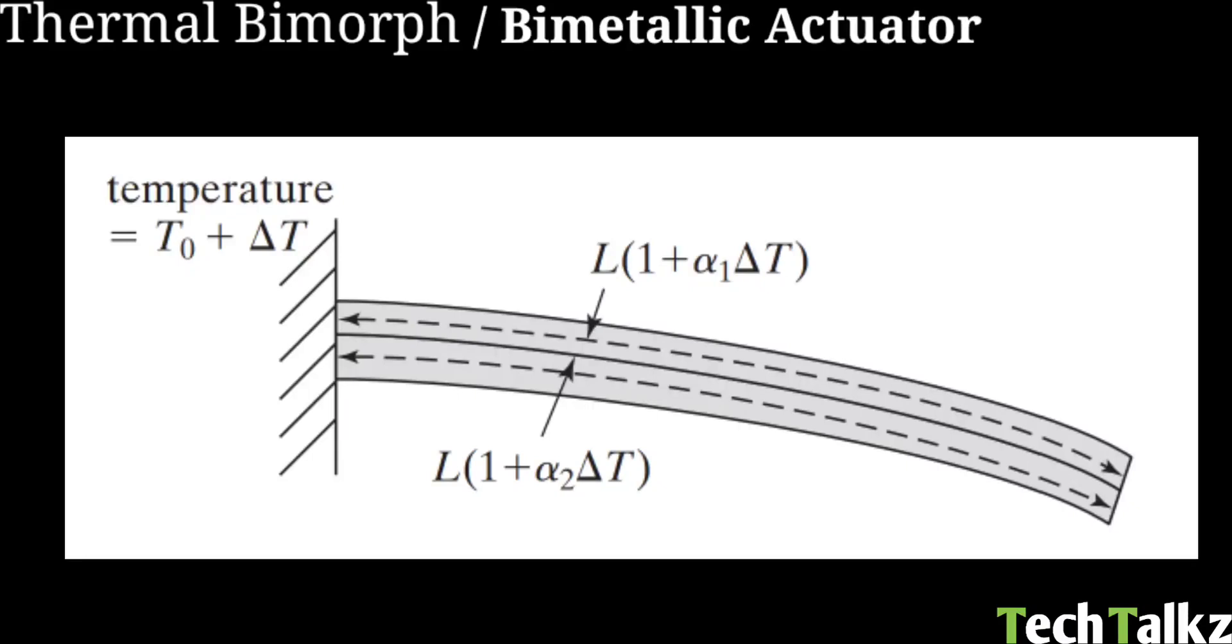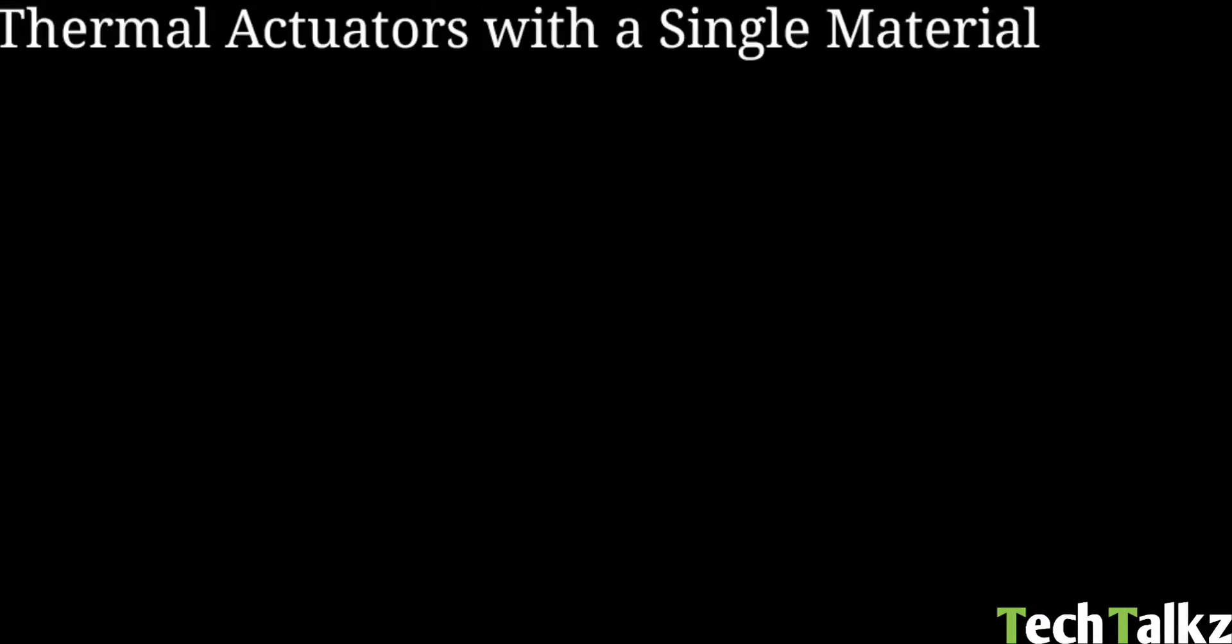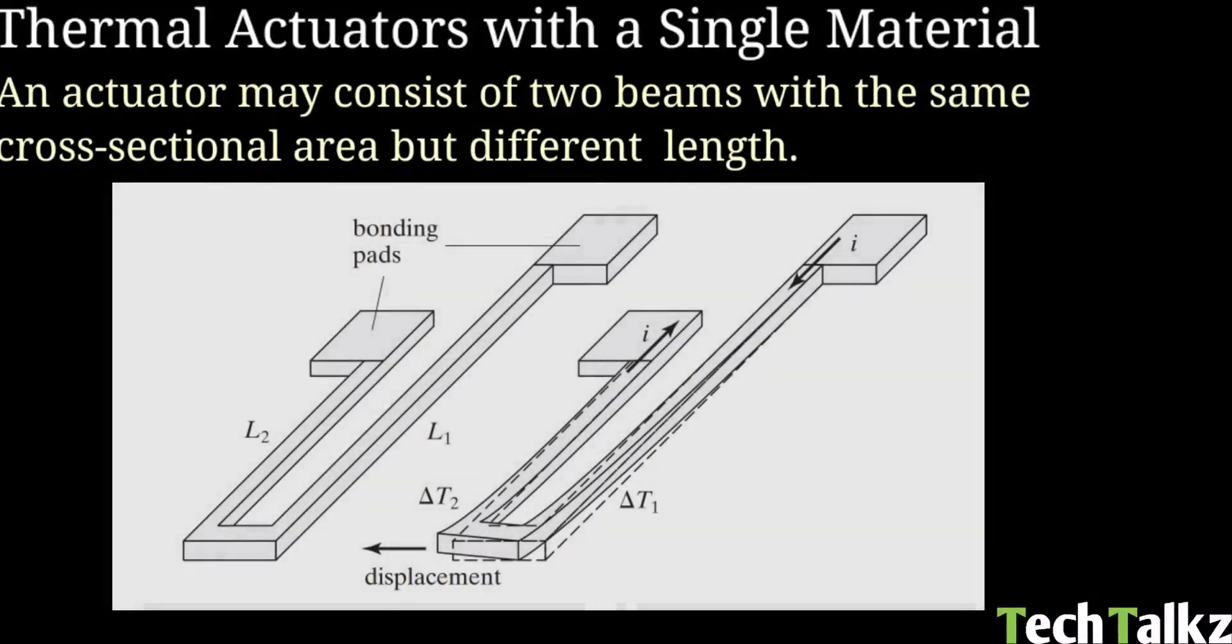Next is thermal actuators with a single material. In bimorphs, we can connect two different materials and it can be used as a thermal actuator or a sensing element. If you have a single material, it is an actuator with two beams, length L1 and L2, long and short.